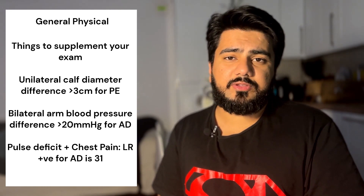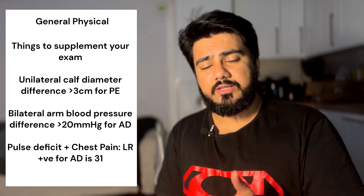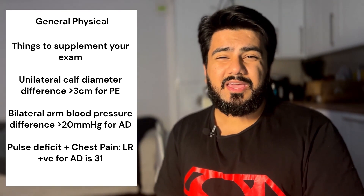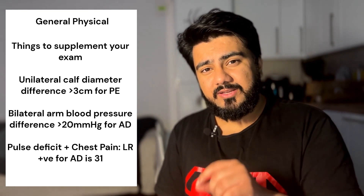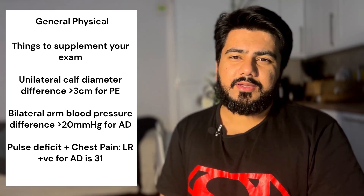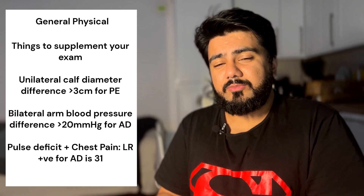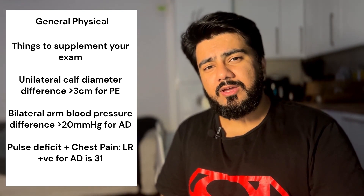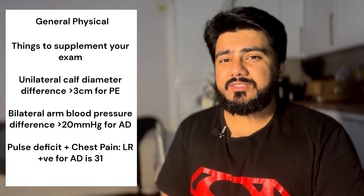After these examinations, perform a general physical examination. Check for any unilateral calf diameter difference, which can suggest deep vein thrombosis leading to pulmonary embolism. Look for pulse differences — radio-radial delays, radio-femoral delays, and carotid pulse deficits. The likelihood ratio for acute aortic dissection when a patient has chest pain and a pulse deficit is 31, which is quite high. Also check blood pressure differences in both upper arms; a more than 20 mmHg difference increases pretest probability for aortic dissection, though 19 percent of ED patients can have this as a normal finding.